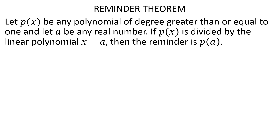We are going to find a polynomial and divide it. The reminder is P of A. We are going to find P of X and divide. If P of A equals 0, we call that value the remainder. So the fact is: Remainder Theory — in the case where P of A equals 0, P of A equals a number, so we find the remainder.